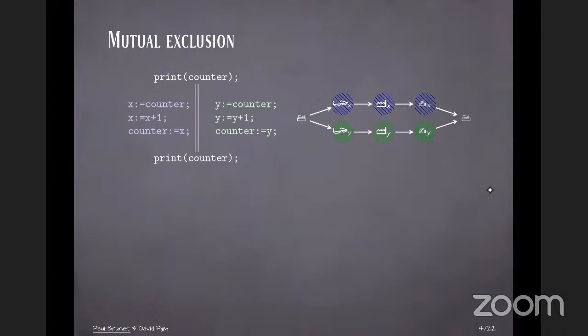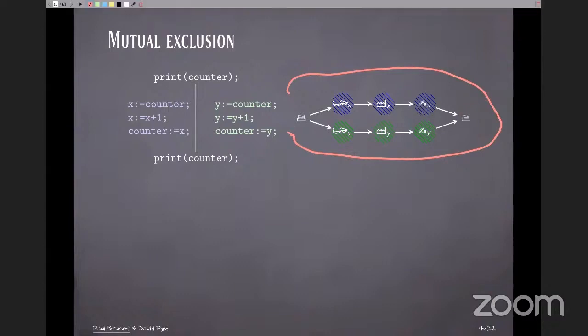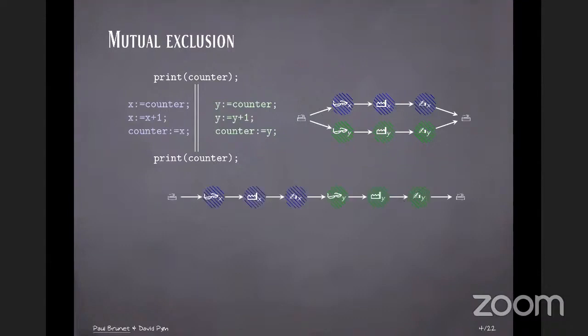Let me illustrate this with an example. So consider this program that is essentially a distributed counter. We have a shared variable and two threads in parallel are trying to increment the counter. And they do so by first loading the contents of the counter in a local variable, incrementing that local variable, and then writing the result in the shared counter. So this corresponds to this Pomset, where we have in parallel a blue thread and a green thread, that each of them doing the three different actions.